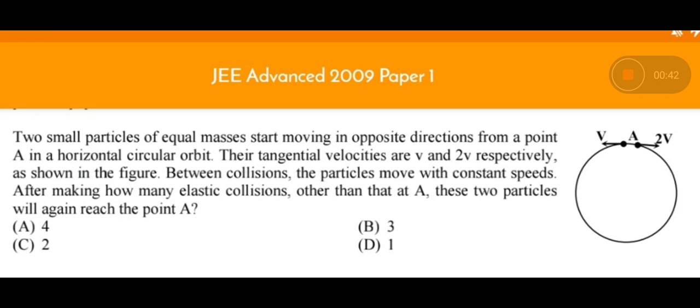After how many collisions other than at A will these two particles again reach point A? To reach point A they should have the same velocities: the first body having velocity v in west direction, the second body having 2v in east direction.